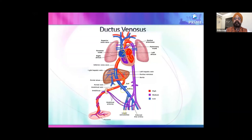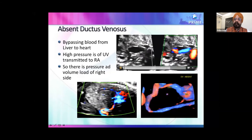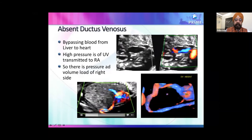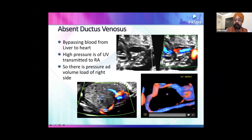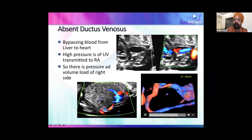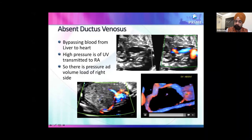The ductus venosus can open into the IVC, directly into the RA, or other locations, and it produces volume load. I missed a patient during my learning curve who only had RA and RV dilatation because I hadn't yet learned how to assess the ductus venosus. Absent ductus venosus produces significant hemodynamic problems, and the RA and RV dilatation should alert you.